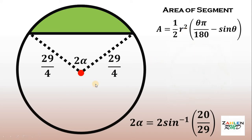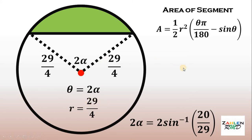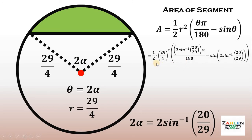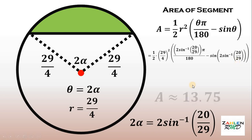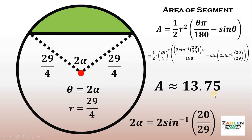We know the value of theta: theta equals 2 alpha, and 2 alpha equals 2 times arcsin(20/29). The radius is 29 over 4. Substituting all values, the area of the green segment equals one half times (29/4) squared times [2·arcsin(20/29)·pi/180 − sin(2·arcsin(20/29))]. Simplifying with a calculator, the area of this segment is approximately 13.75 square units. And we're done.